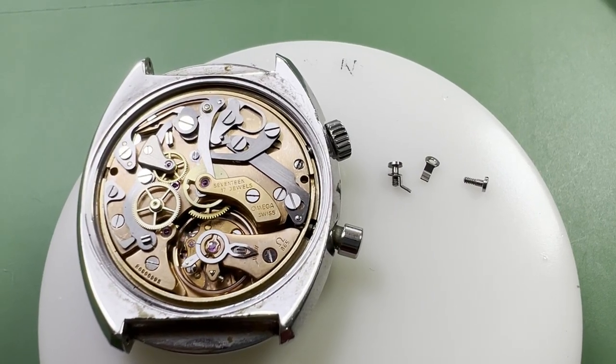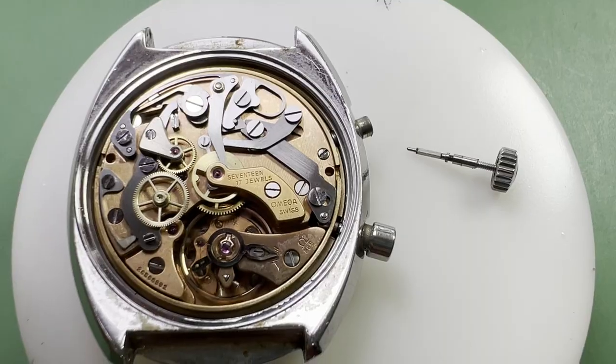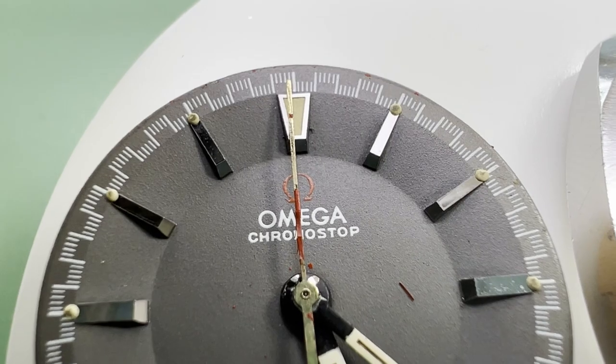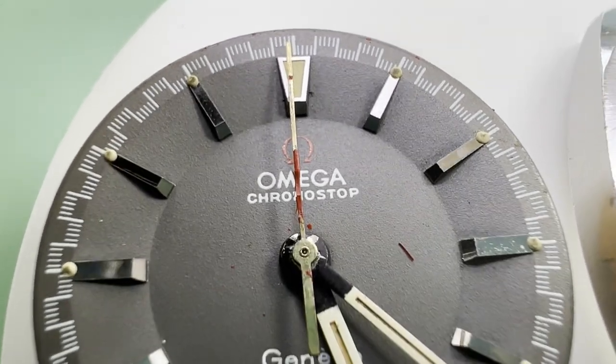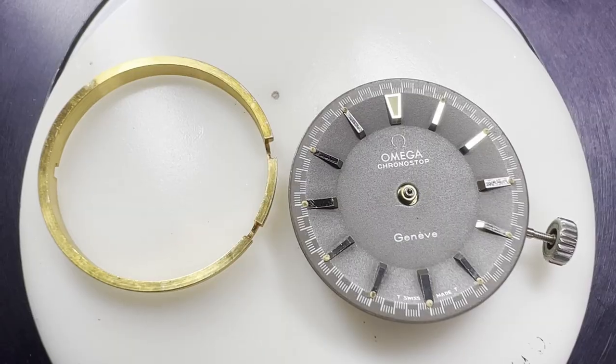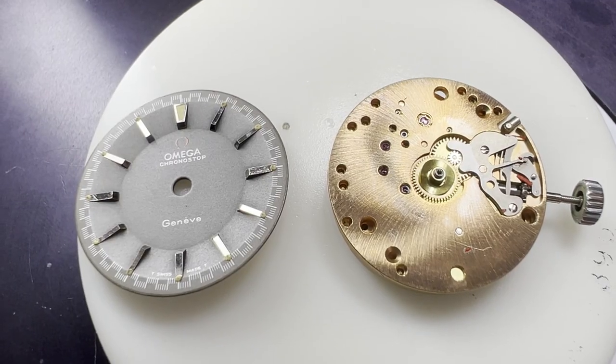Continuing on with the disassembly, we remove the case clamps, the crown and stem. Freeing the movement from the case, you can see that the knockoff replacement hand has shed its paint. This will need to be replaced with a genuine Omega seconds hand. All the hands are removed, the movement ring is removed and the dial is removed.